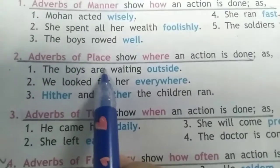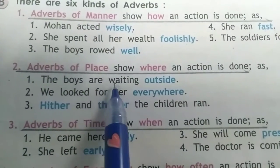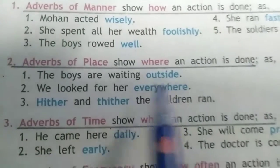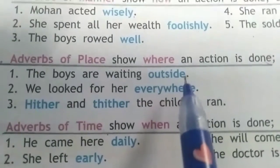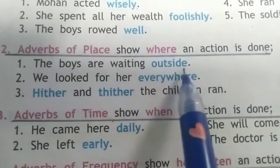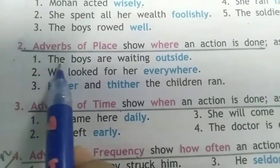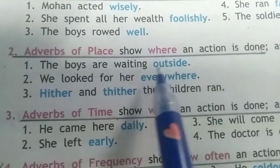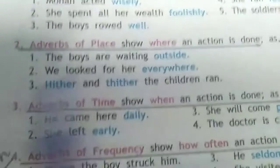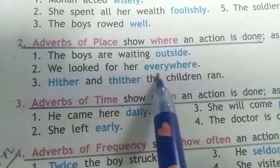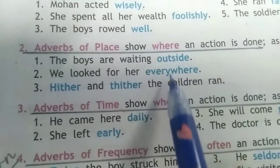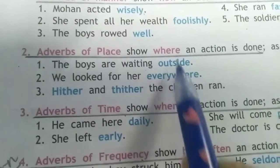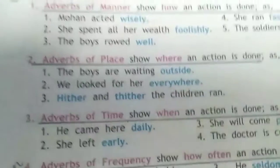Adverb of place tells us where something is done or happens. We use it at the end of the sentence most of the time. For example: 'The boys are waiting outside.' Where are they waiting? Outside. 'We looked for her everywhere.' Where did we look? Everywhere. These are adverbs of place.